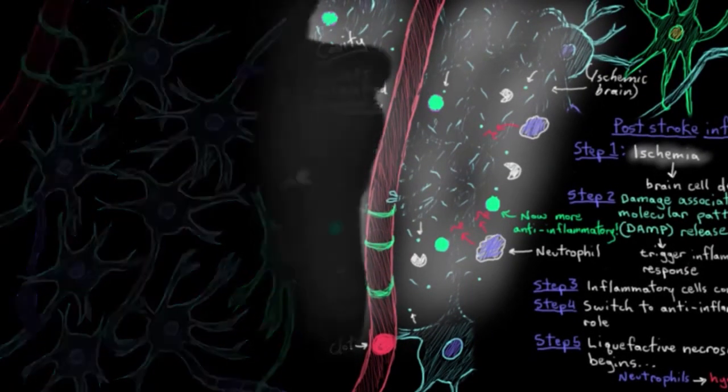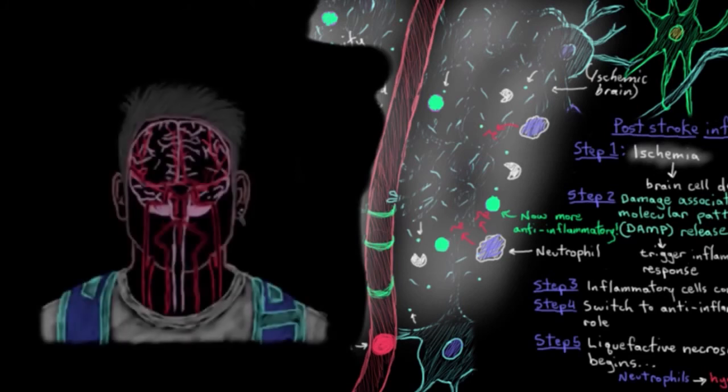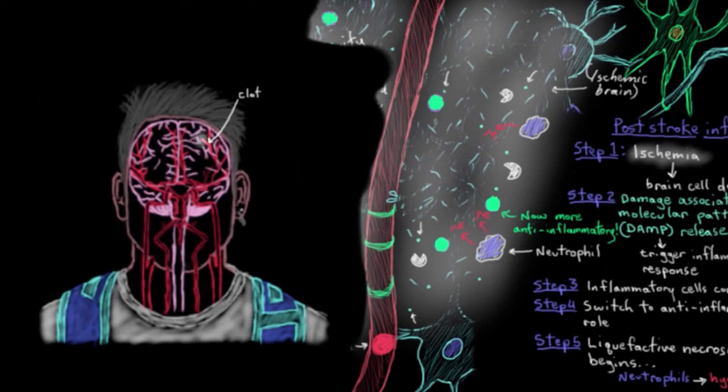So let's zoom out a bit. So here is our guy who's been helping us learn about strokes this whole time. And here is the clot. And here is the ischemic area in the brain, in his brain. And just so that we're up to speed here. So we see the ischemia and we know that resulted in brain cell death. We know the DAMPs got released. Then the inflammatory cells came and did their thing. And then the liquefactive necrosis began. And now we want to know what ends up happening with our necrotic cavity that we developed after our stroke.